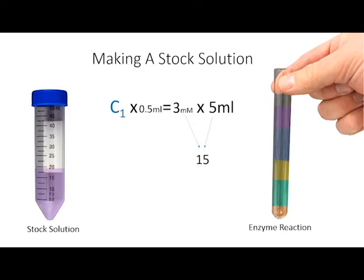3 times 5 is 15. Divide by the half mil, and we get 30. The mil unit is canceled out in our math, so we're left with millimolar as our unit. Now we know the C1 in our equation is 30 millimolar. In other words, we need to make a 30 millimolar ethanol stock solution, and when we add a half a mil of that to our enzyme mixture, we'll achieve a 3 millimolar ethanol reaction.